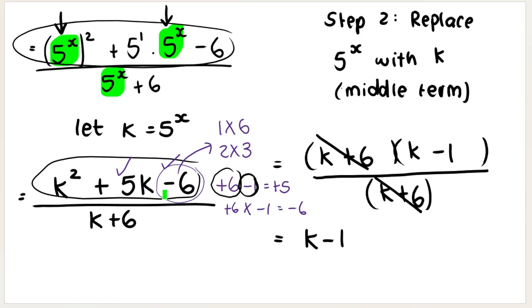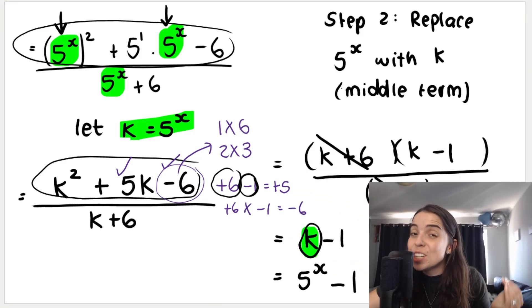But that's not your answer because K wasn't in the original expression. But remember, we let K equal 5 to the power of X. So all you do at the end is simply replace K with 5 to the power of X. And then this says minus 1. So we need to say minus 1. And that's it. That's how we simplify the expression using the K method.